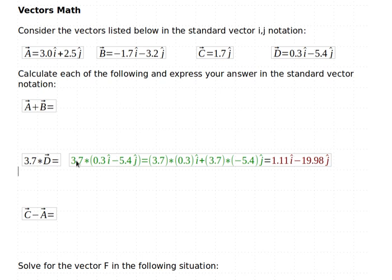So then by the distributive property, I can take that 3.7, and I multiply the 3.7 times the 0.3. And I multiply 3.7 times the negative 5.4.